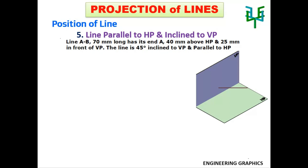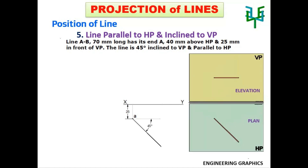Draw the XY line first. Mark A 25mm below the XY line, because end A is 25mm in front of VP. The line is 45 degrees inclined to VP, so draw a 45-degree line from A for a distance of 70mm, which is the true length. The other end point is B. Now fix A-dash 40mm above the XY line. Draw a projector from B, then draw a horizontal line from A-dash up to the projector — this point is B-dash.